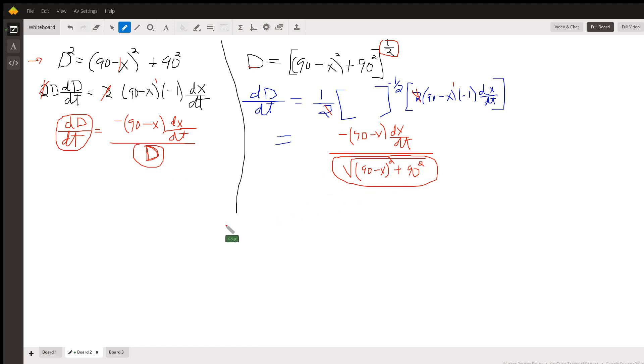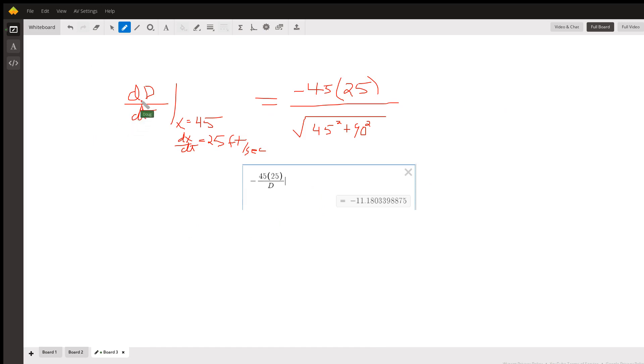So on board three we want to find the derivative of big D with respect to t when x is 45, that's a specific point in time, and when given that dx/dt is 25 feet per second. So we'll get the opposite of 90 minus x, which is 45, times dx/dt, 25, divided by big D, which is this number right here. I think it's 100 point something.